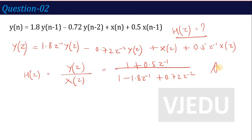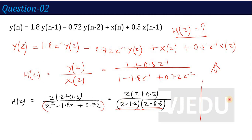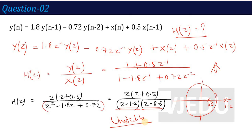But if stability is being asked, first convert to positive powers of z: H(z) = (z + 0.5) / (z² - 1.8z + 0.72). Factoring the denominator gives (z - 1.2)(z - 0.6). The poles are at z = 1.2 and z = 0.6. Since z = 1.2 is greater than 1, that pole lies outside the unit circle, so the system is unstable. This is how you check stability or instability based on the system function.